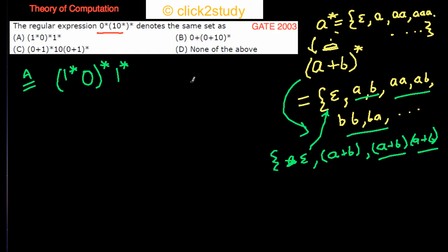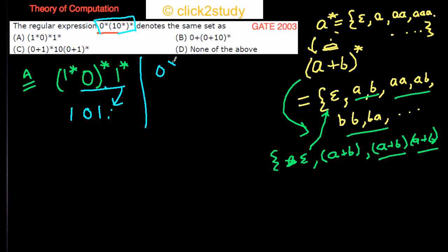Now back to the counter example approach. Let's consider the string 101. You can generate 101 from option A: use 1-star to get one 1, leave the 0 as is, and use the final 1-star once. So option A can generate the string 101.